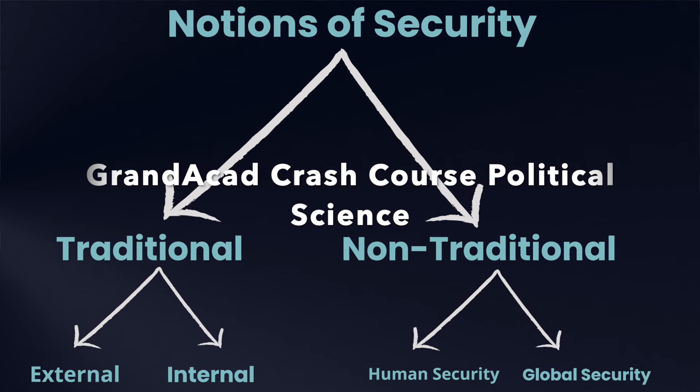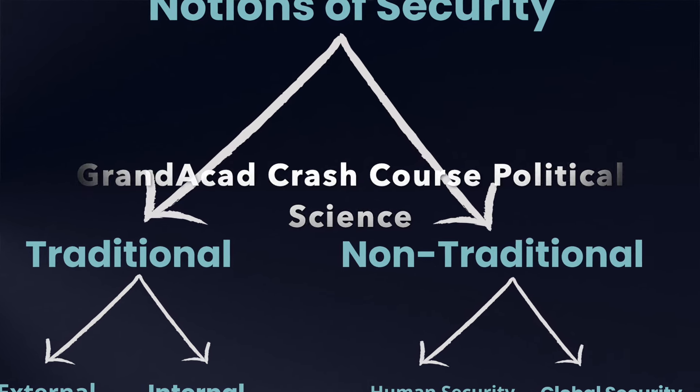Day 1's final chapter is Security in the Contemporary World, also 6 marks. The entire chapter can be boiled down into a flowchart — external, traditional, internal, and non-traditional notions — you need to know everything. The summary of the chapter can be asked as a 6-marker in which you elaborate all these things. Co-operative security is 4 marks, and India and security, threats to security, etc., can also come as a 6-marker.